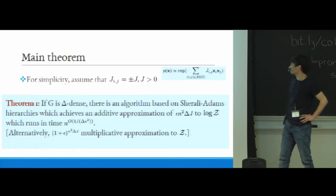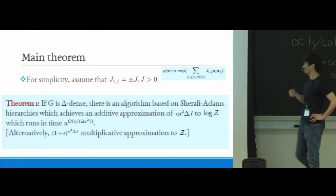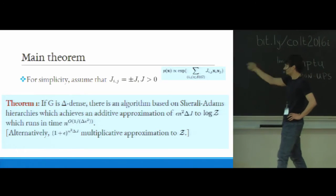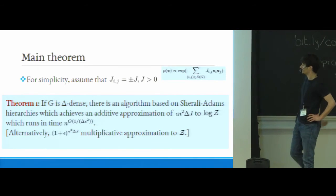Alternatively, you can also think of it as a (1+ε) to the factor of n²δJ multiplicative approximation to the partition function. And this factor of n²δJ should not really surprise you that much. This is basically just the sum of the absolute values of the potentials over all of the edges in the graph.